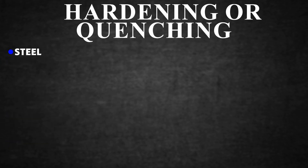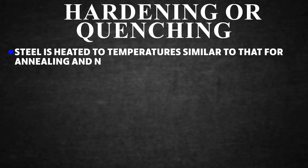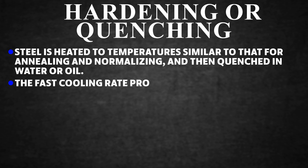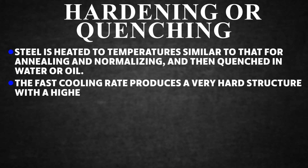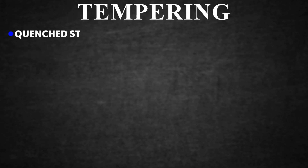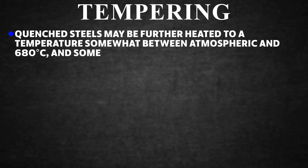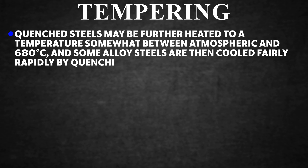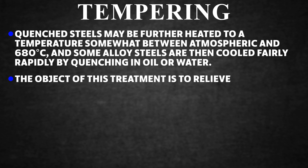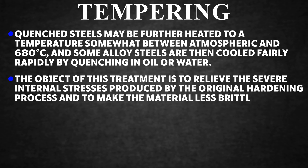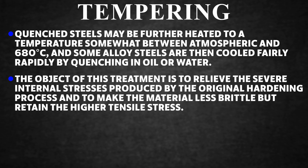Hardening or Quenching. Steel is heated to temperatures similar to those for annealing and normalizing, then quenched in water or oil. The fast cooling rate produces a very hard structure with higher tensile strength. Tempering: quenched steels may be further heated to a temperature between atmospheric and 680°C, then cooled fairly rapidly by quenching in oil or water. The object is to relieve severe internal stresses produced by the original hardening process and to make the material less brittle while retaining the higher tensile strength.